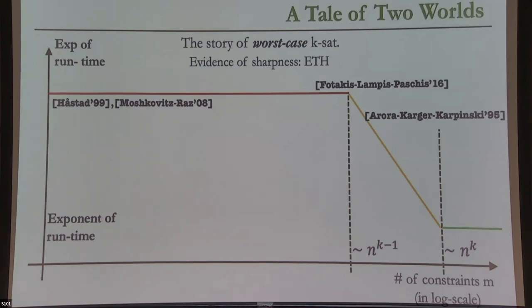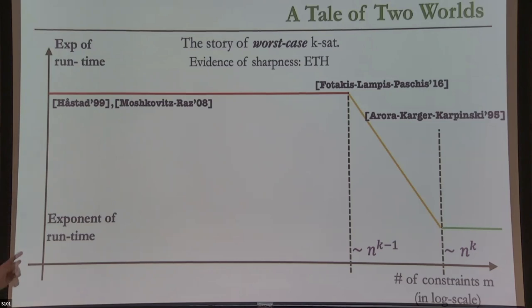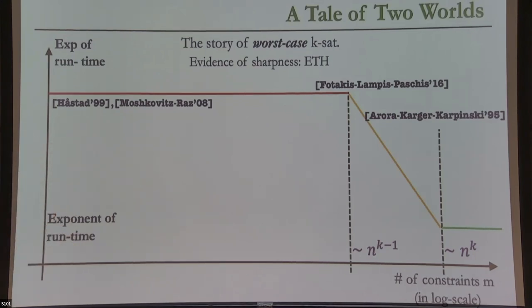To capture the picture of worst-case complexity, it's useful to understand what happens in various regimes of density. On the x-axis is the exponent of N in the number of constraints — think of it on a log scale — and on the y-axis is the exponent of the running time as a function of N. For KSAT there are at most N^K constraints, so the x-axis varies from 0 to K, and the y-axis from 0 to N since there's always an exponential-time algorithm.